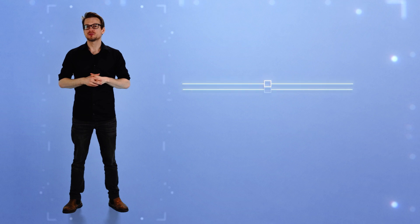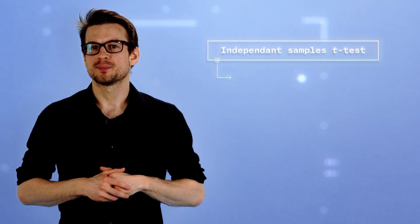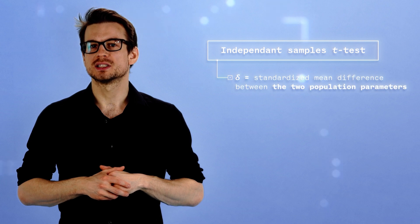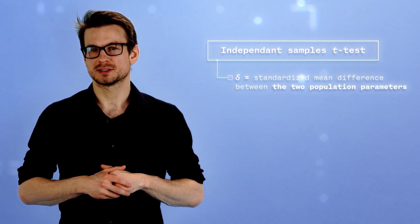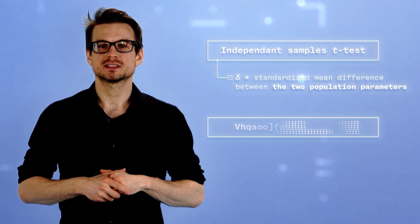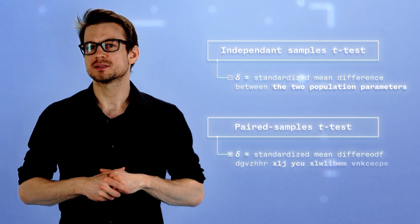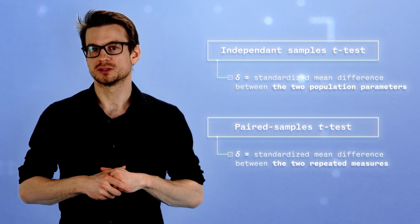Finally, performing independent samples and paired samples t-tests follows the same rationale as presented so far. The only thing that changes is the meaning of the standardized effect size δ. In the independent samples t-test, δ corresponds to a standardized mean difference between the two population parameters. In the paired samples t-test, δ corresponds to a standardized mean difference between the two repeated measures.